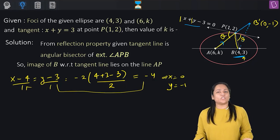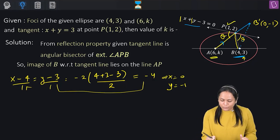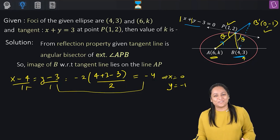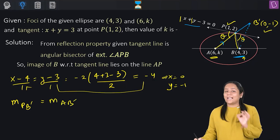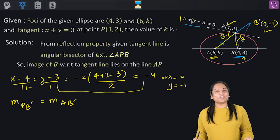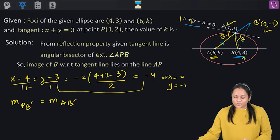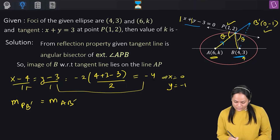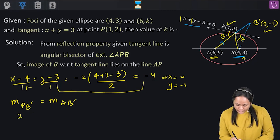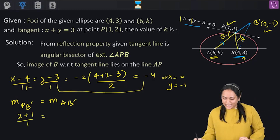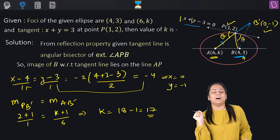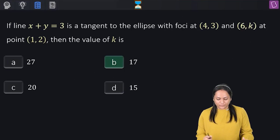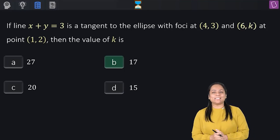Now A, P, and B' must be collinear. Slope of PB' = (2 − (−1))/(1 − 0) = 3. Slope of AB' = (k − (−1))/(6 − 0) = (k + 1)/6. Setting equal: (k + 1)/6 = 3, so k + 1 = 18, giving k = 17. The answer is B.